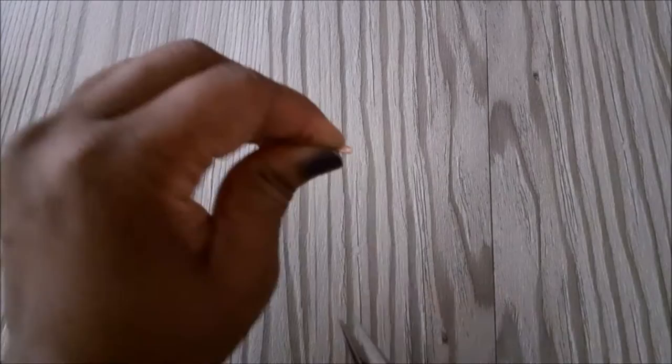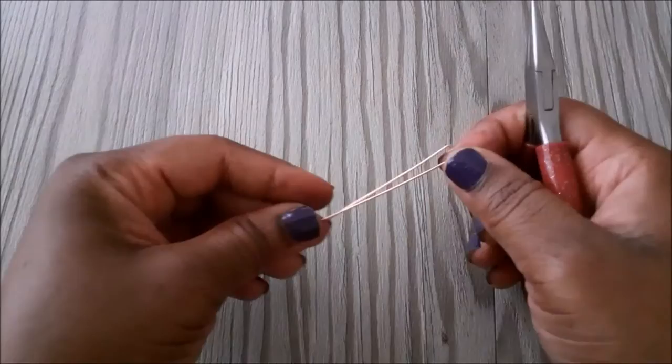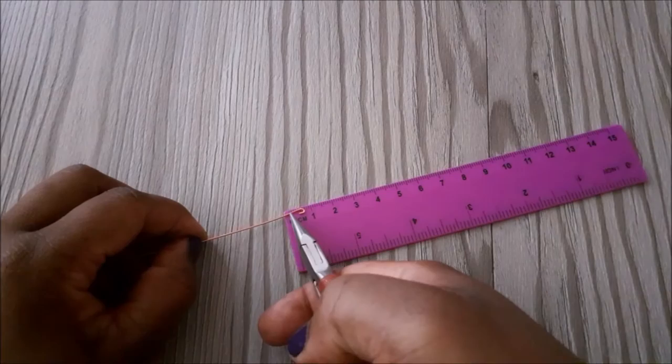Then we're going to use our chain nose pliers to bend the wires like a small U-shape. So the first ear wire that we're making will be for the right ear.